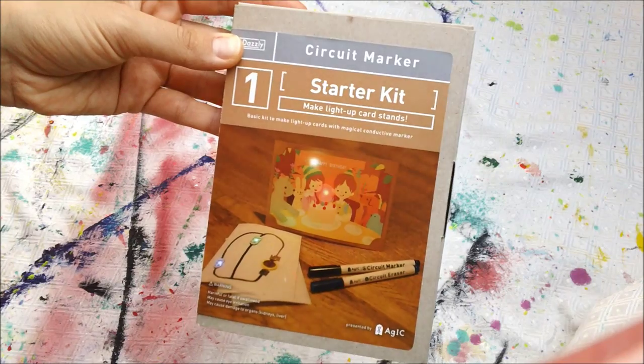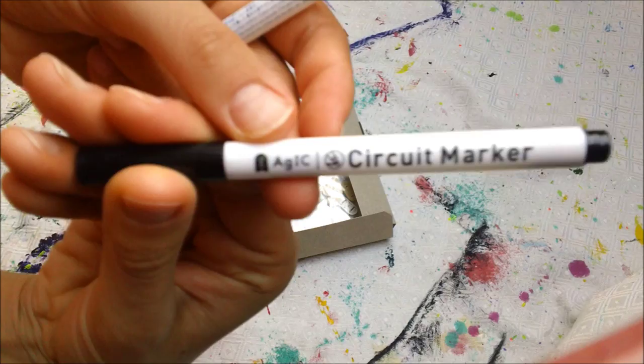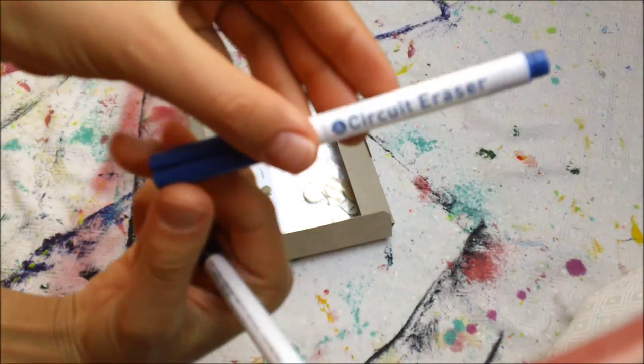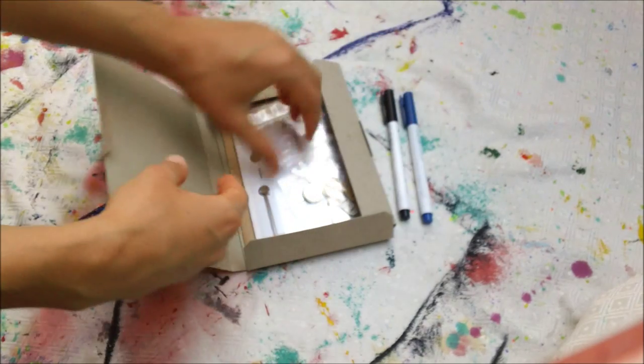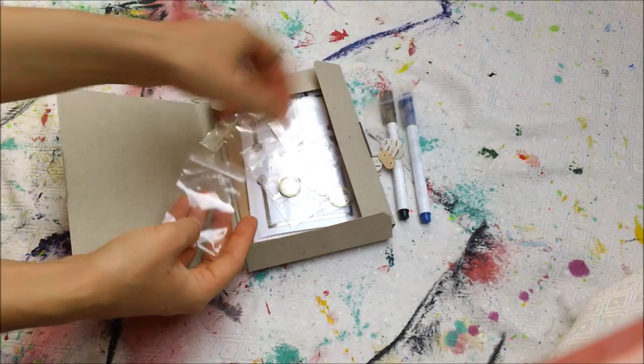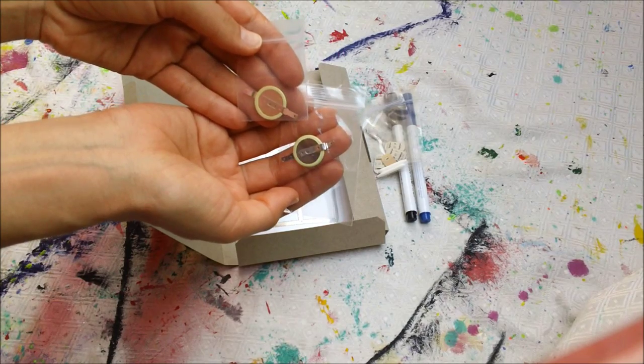The company sent me a starter kit that includes the circuit marker which comes with an eraser in case you make a mistake while you're drawing the circuit, four LED tags in the colors white, blue, red, and green,